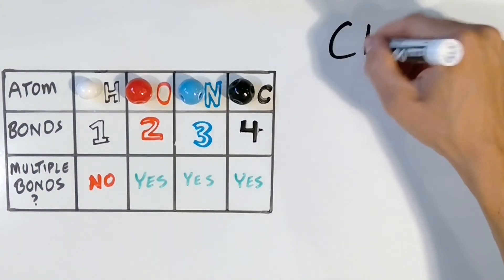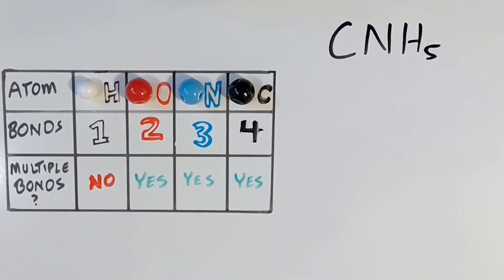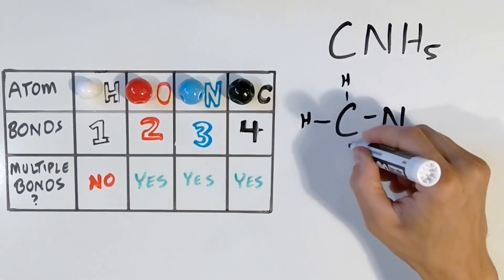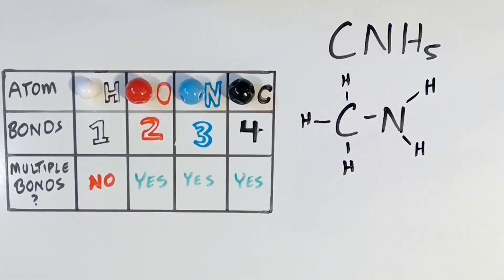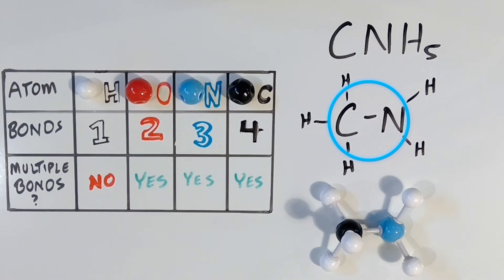This next molecular formula is for a chemical called methylamine, CNH5. It has one carbon, one nitrogen, and five hydrogens. Pause the video and see if you can determine how this molecule is put together. Methylamine is built like this. Each hydrogen is bonded one time, the nitrogen has three bonds, and finally the carbon has four single bonds. Note that in more complex molecules, the hydrogen atoms are arrayed around the outside of the molecule, while higher bonding atoms such as carbon and nitrogen are more likely to be found bonded together near the molecule's middle area.